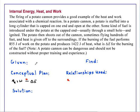In a potato cannon, a potato is stuffed into a long cylinder that is capped on one end and open on the other. Some kind of fuel is introduced under the potato at the capped end, usually through a small hole, and ignited. The potato then shoots out of the cannon, sometimes flying hundreds of feet, and heat is given off to the surroundings.